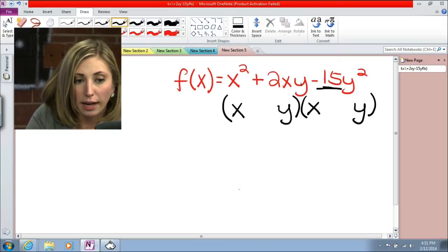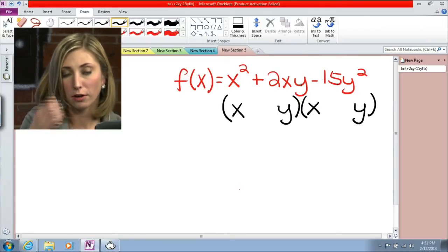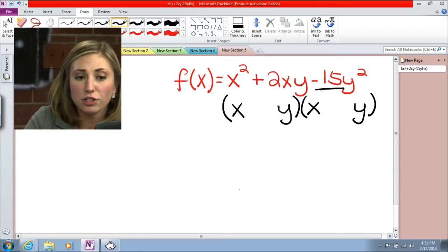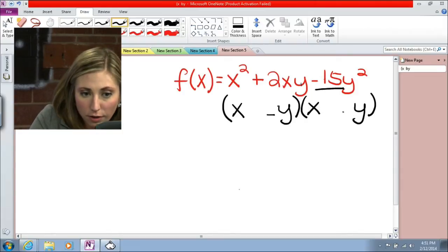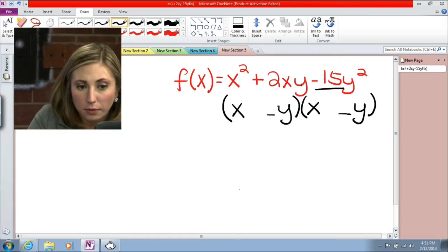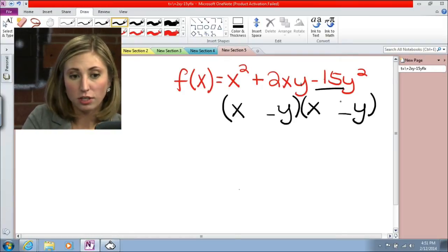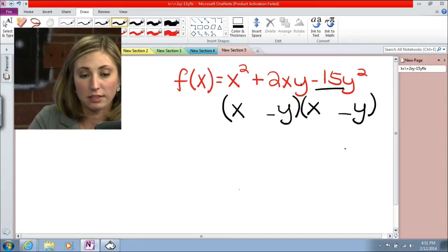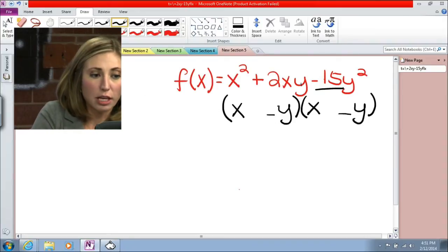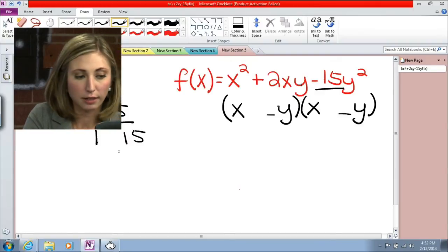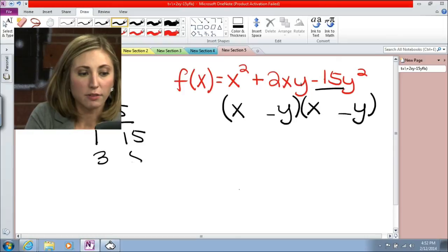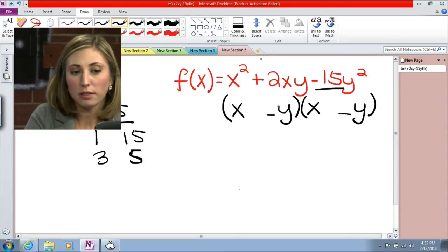Now we need to look at the coefficient in front of our y. The coefficient here is negative 15, which means the coefficients in front of y in my factors need to multiply together to give us negative 15. So thinking about different things that can give us negative 15, we have 1, 15, and one of them would have to be negative, and we have 3 and 5. So those are our possibilities.